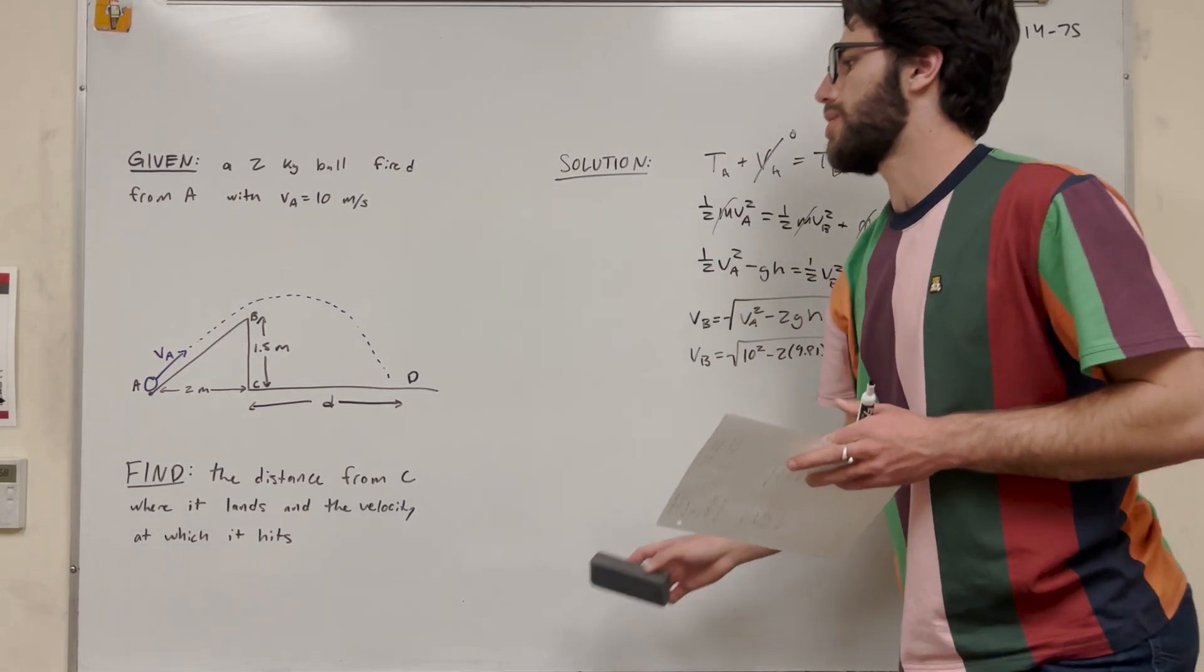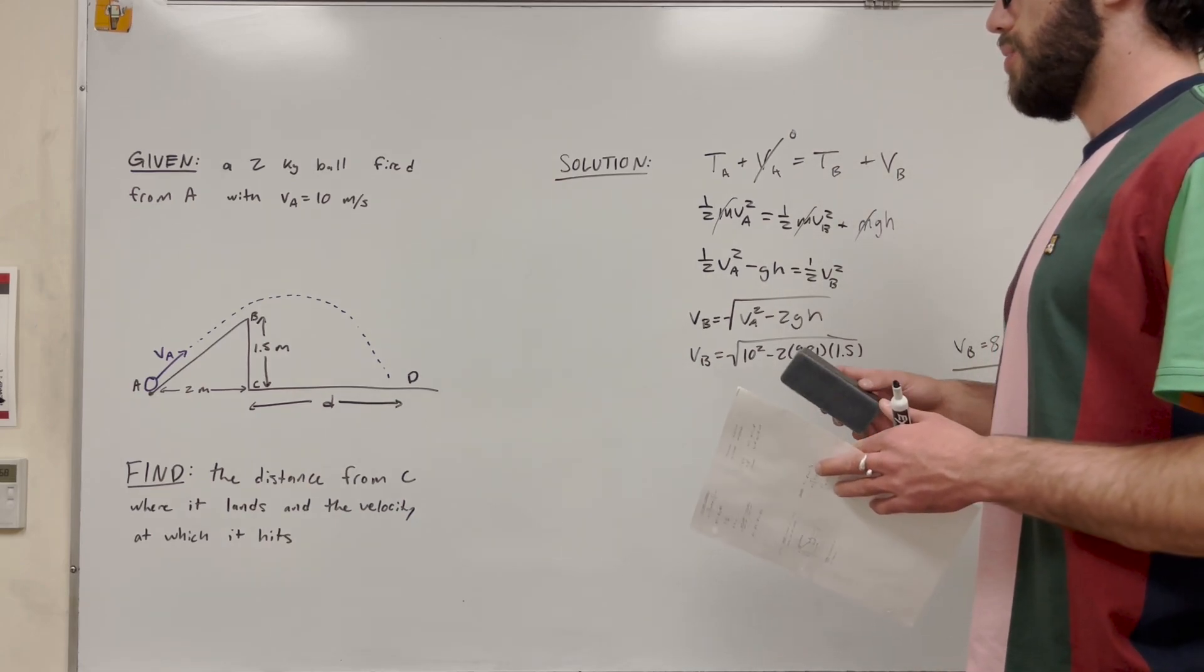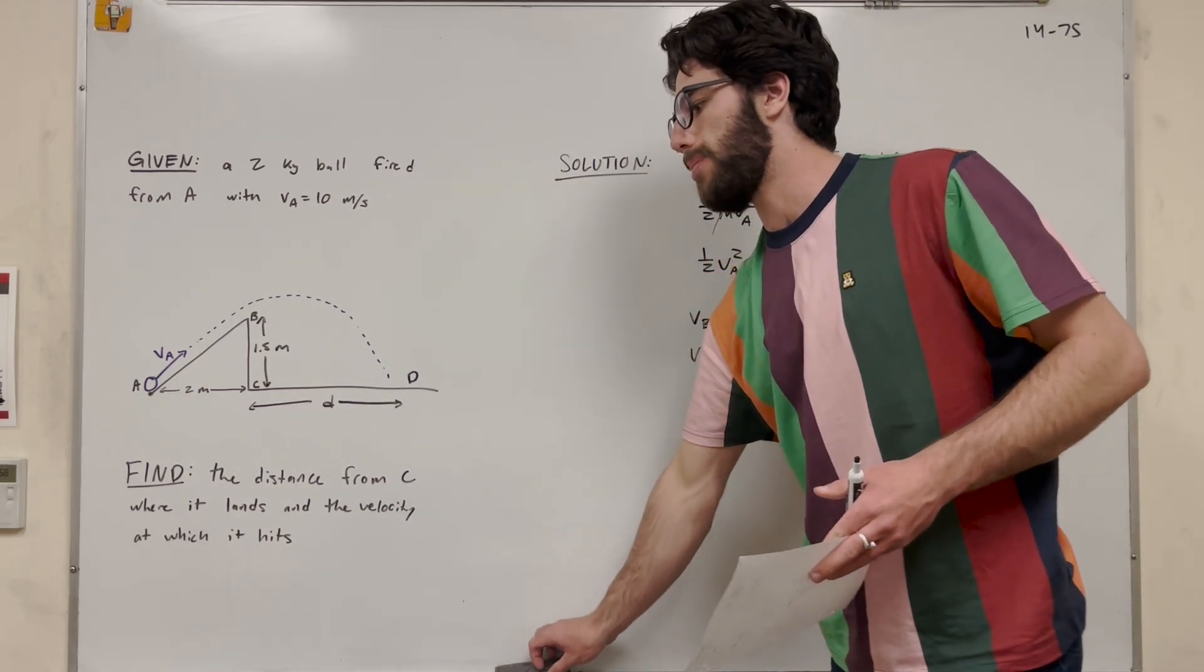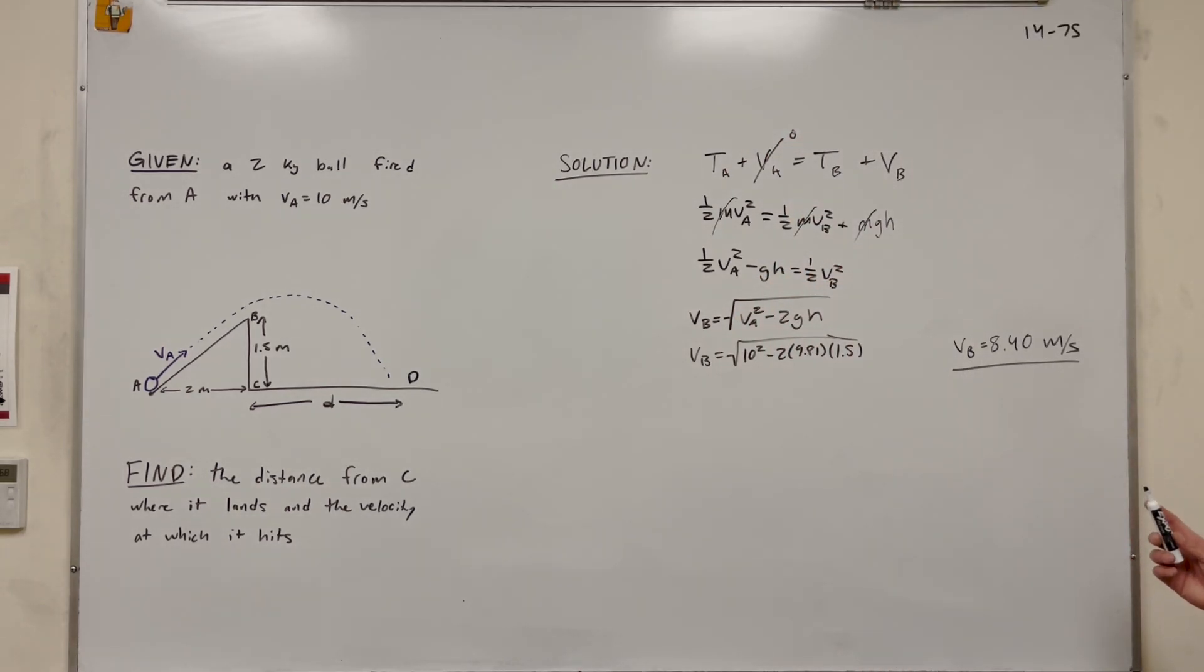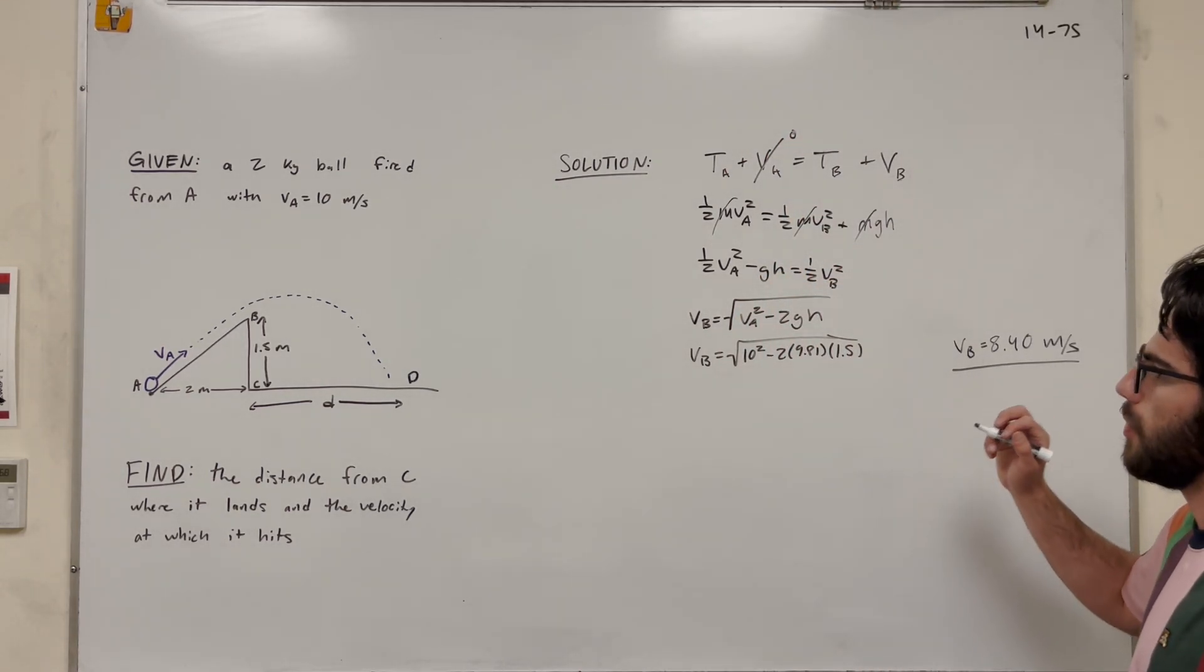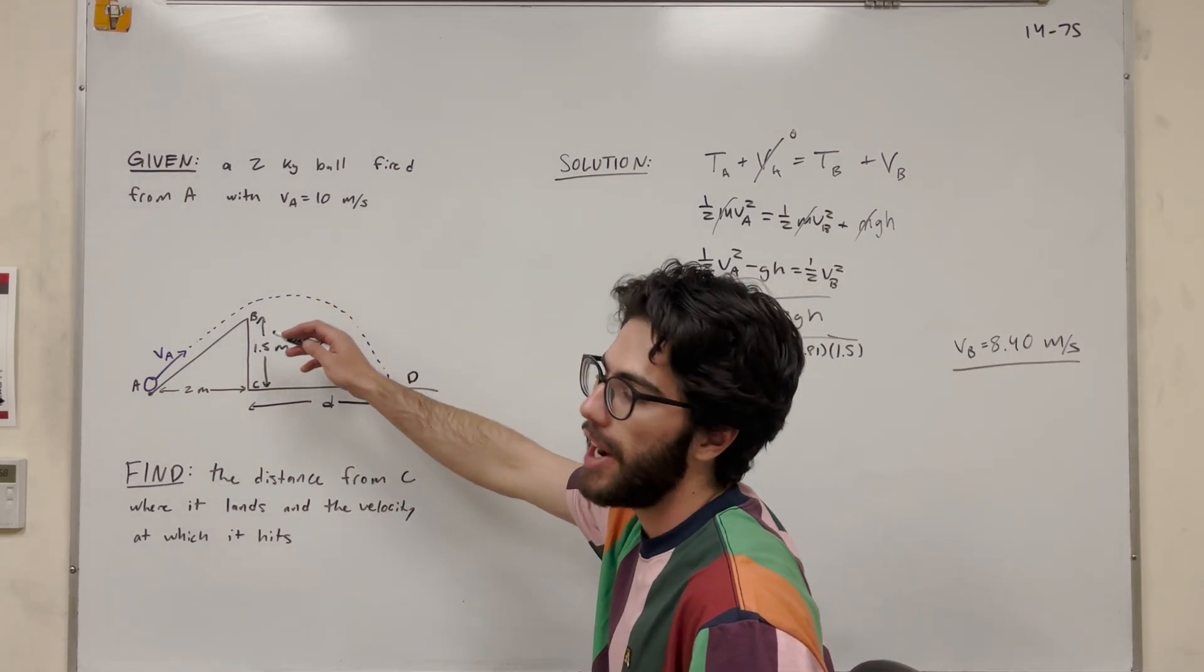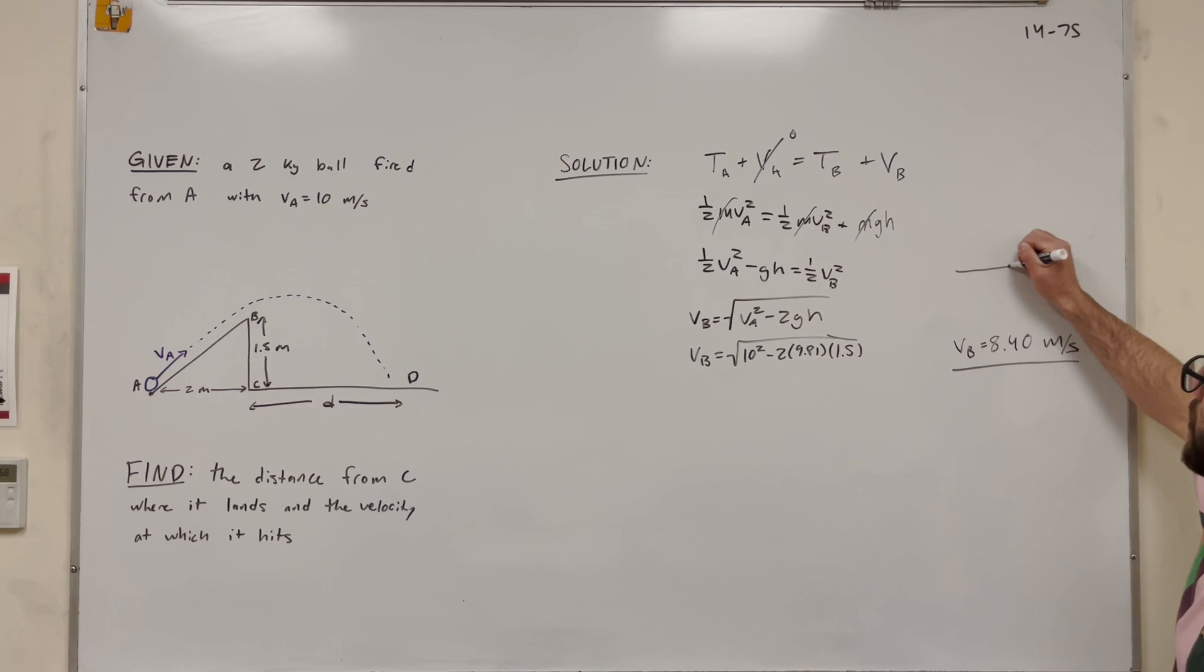So we haven't really got to part two yet. We're still trying to find the distance. So now what we have is a kinematics problem. So first of all, let's write velocity B as a vector. So we know that this triangle, we have a 2 times 1.5 triangle is the slope of this hill. So if you were to draw this triangle, we know that this space is 2. This height is 1.5. And then if you do the Pythagorean theorem, square root of 2 squared plus 1.5 squared, you find that this hypotenuse is 2.5.